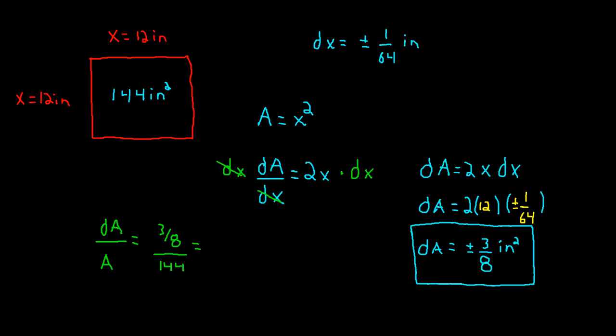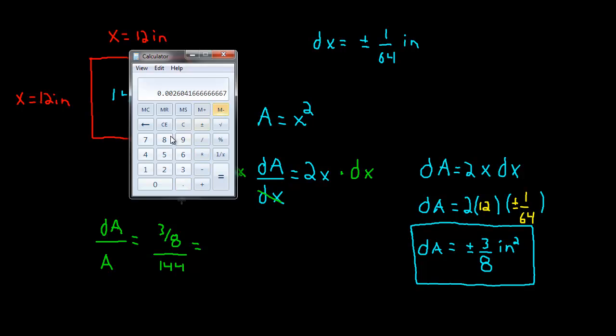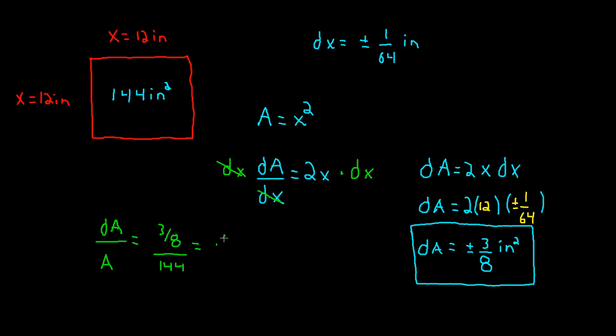And I don't know what this is off the top of my head, so I'll get my trusty calculator. I actually think I just did this. Let's make sure, let's see, 3 divided by 8 equals 0.375. Now let's divide that by 144. And that indeed does equal 0.0026. So let's write this down, 0.0026. And we call this the relative error.